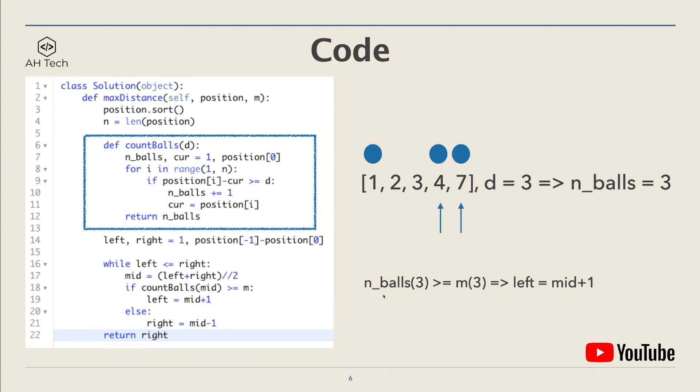Since the number of balls is 3, which is bigger or equal to m, we will set left to median plus 1 and then go to the next while loop of binary search.